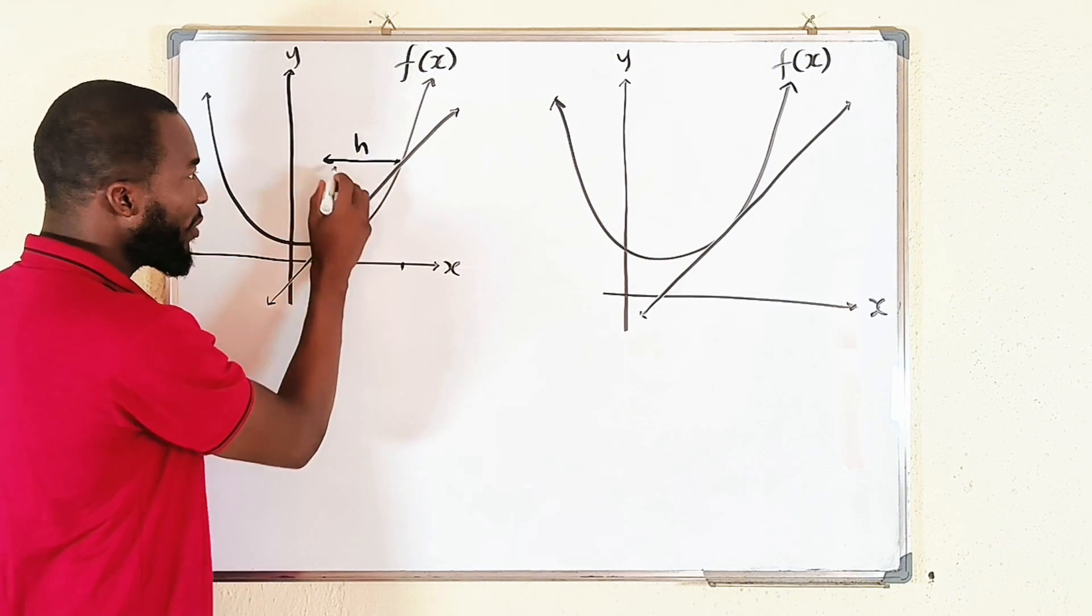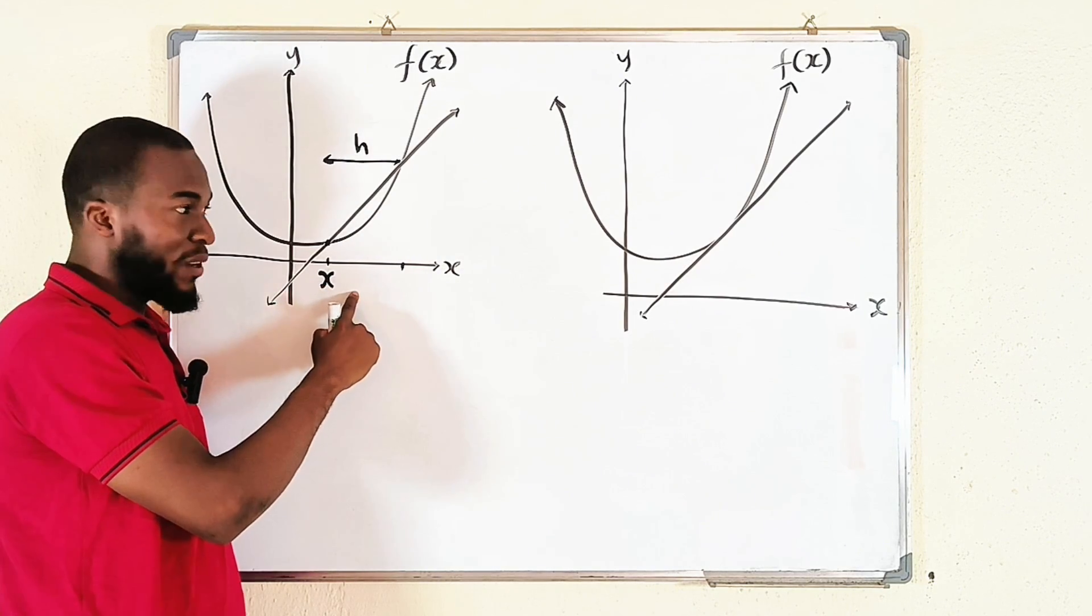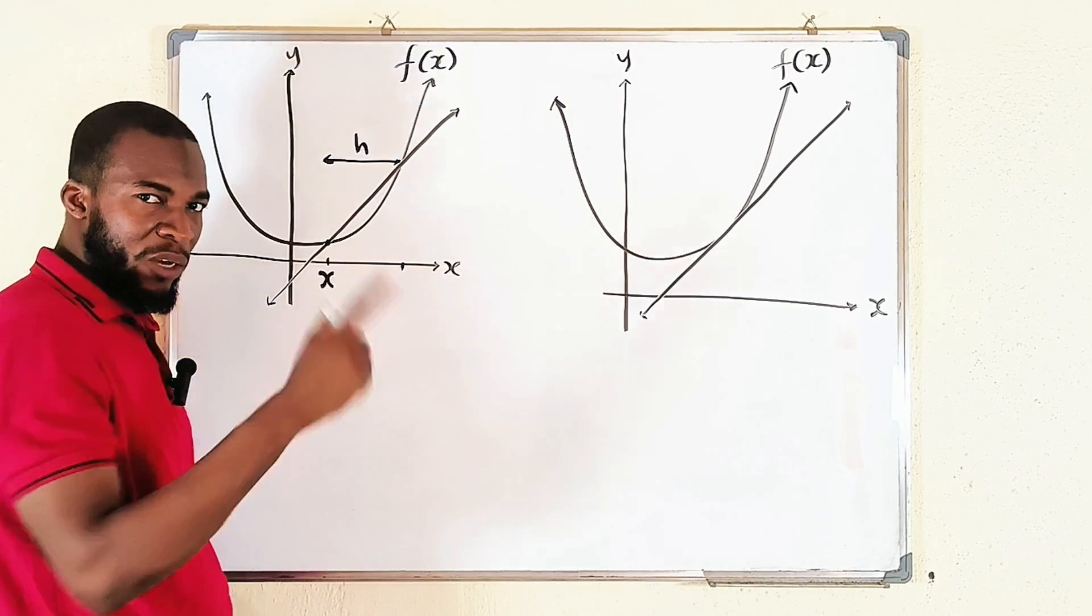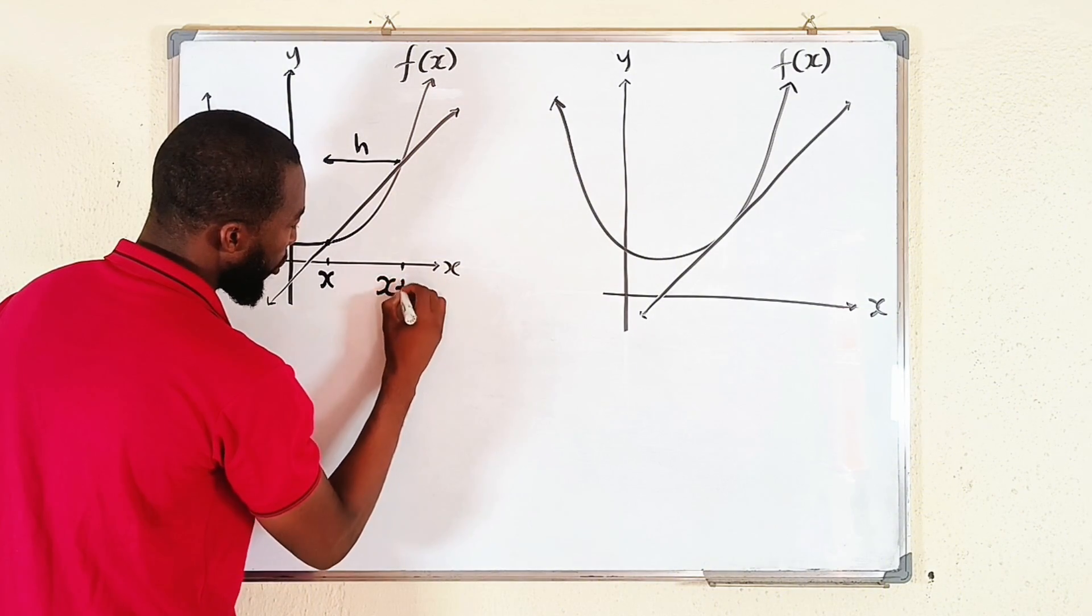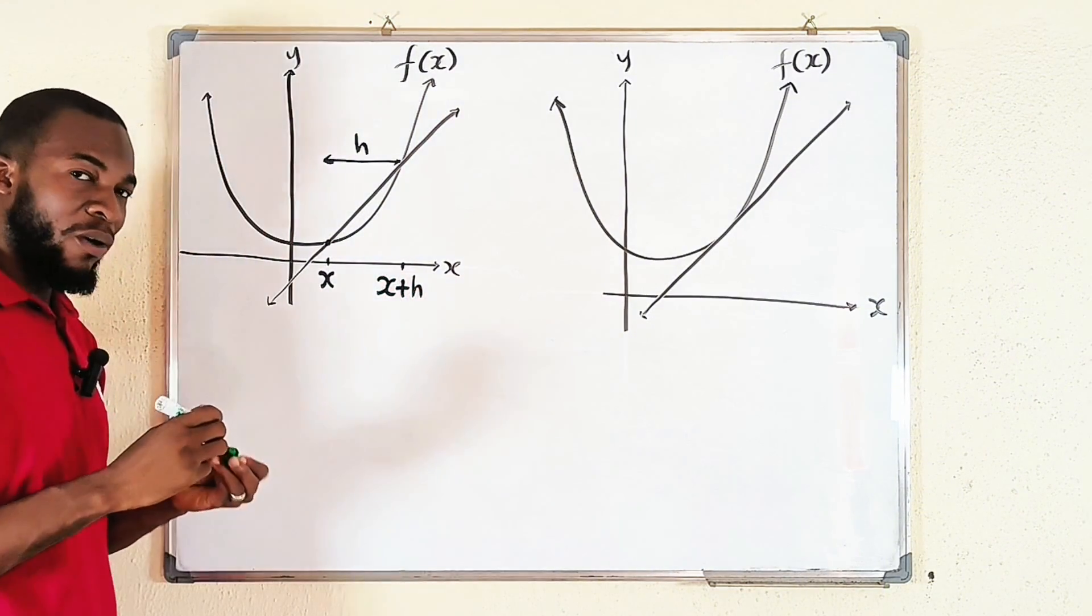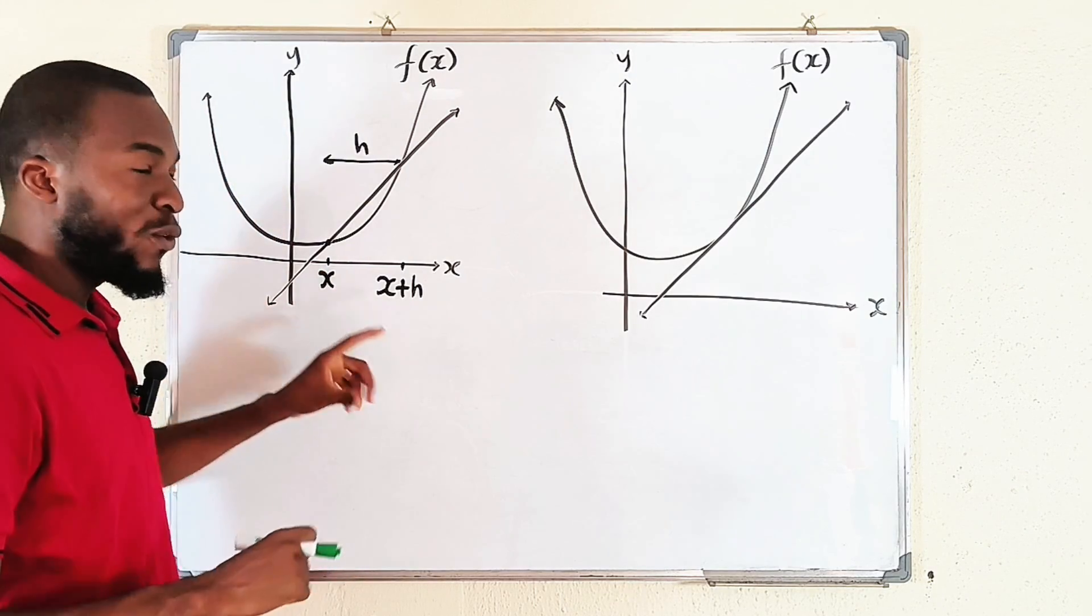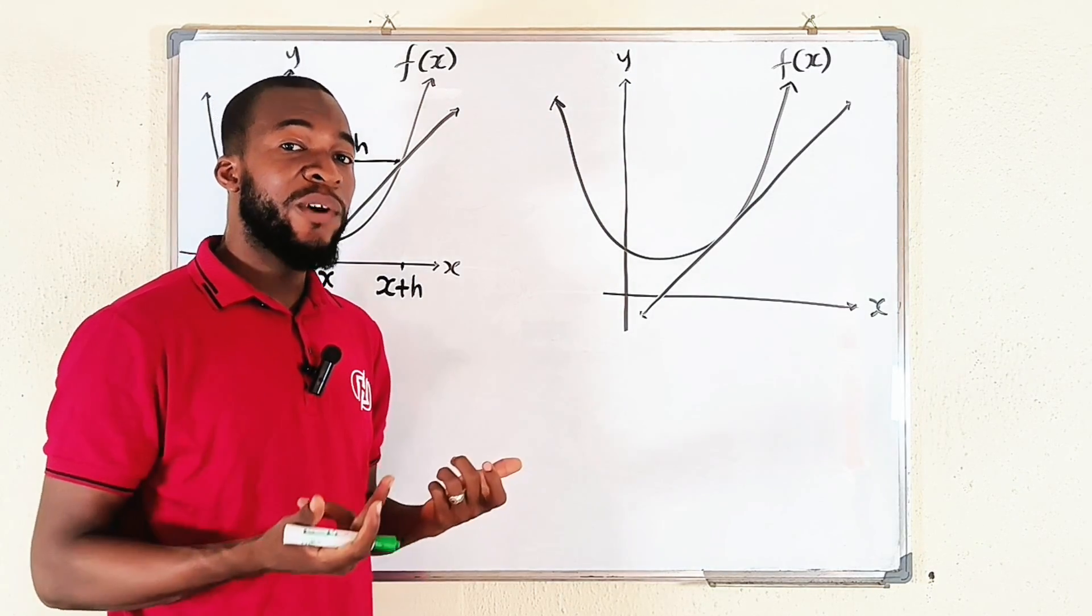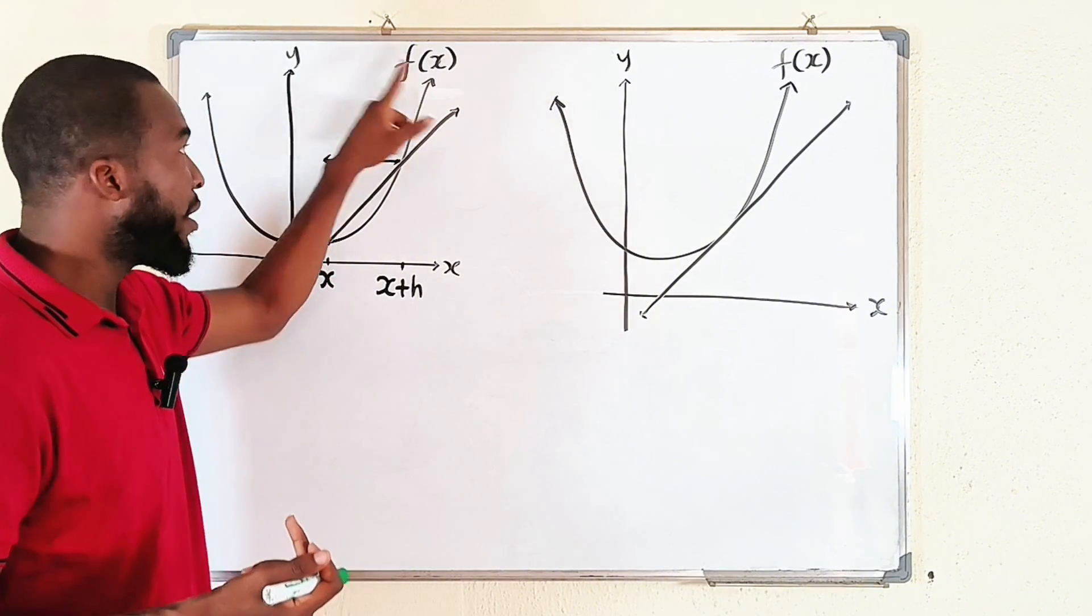x plus h. Assuming that this point is 1, and the distance between them is 3, then we expect this to be 4. But I don't want to use numbers. So this second point is going to be x plus h. That is on the x-axis. Then remember, if you want to find the corresponding value of y, you have to plug in that value into the main function, right?